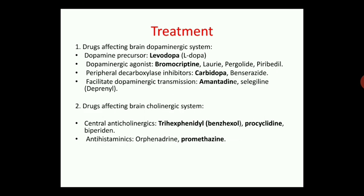The other option is to restore the cholinergic system. The cholinergic system uses acetylcholine as its neurotransmitter, which is excitatory. To balance this, anticholinergic drugs — acetylcholine inhibitors — are used. Central anticholinergics used include trihexyphenidyl (benzhexol), procyclidine, and biperiden. There are also certain antihistamines like orphenadrine and promethazine that can be used to treat Parkinson's disease.